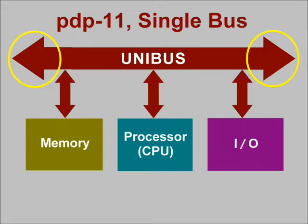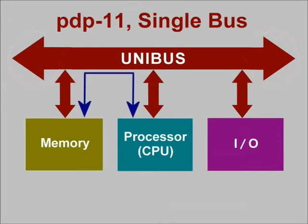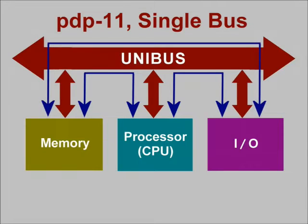Because the unibus is a common path, it is possible for any computer element to communicate with any other element on the bus. Take a look for yourself. The arrow shows that the processor can communicate directly with memory. Also, the processor can communicate directly with the I/O device, or vice versa. In fact, certain I/O devices can deal directly with memory at the same time that the processor is busy doing its own job. That extra bus isn't needed in our PDP-11 system.